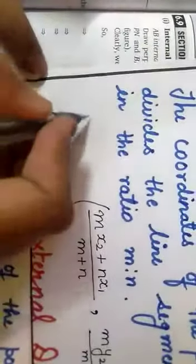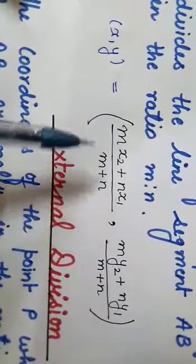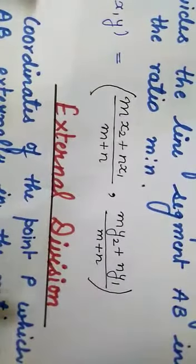So how to find x, y? By this formula: (x, y) equals (mx₂ + nx₁)/(m + n) and (my₂ + ny₁)/(m + n).